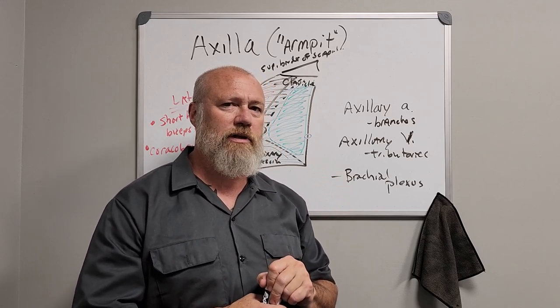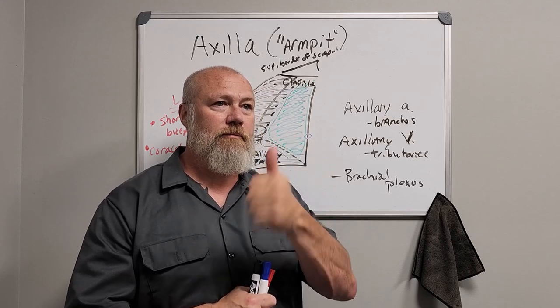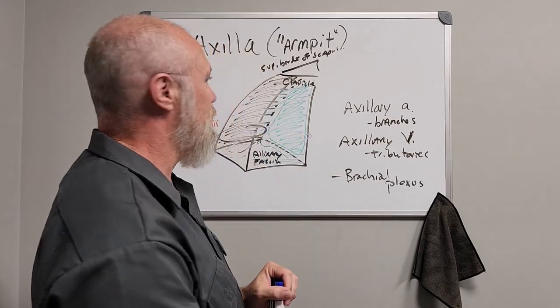Let's move on to some of the contents in the armpit, the axillary subclavian to axillary artery and its tributaries in there. And we'll do brachial plexus, probably do separate video for each. Oh, hit the like button, subscribe, hit the notifications.